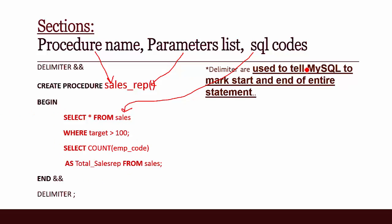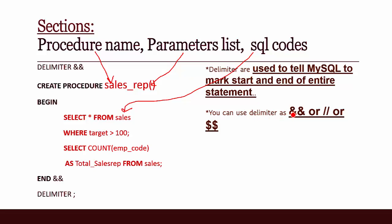Delimiters are used to tell MySQL to mark the start and end of the entire statement. You can use a delimiter like double ampersand (&&), double forward ticks, or double dollar signs ($$).